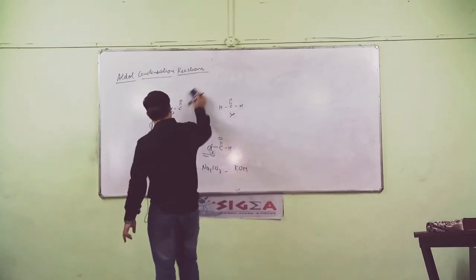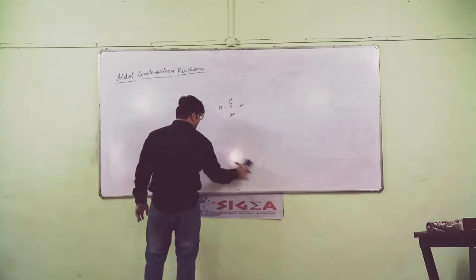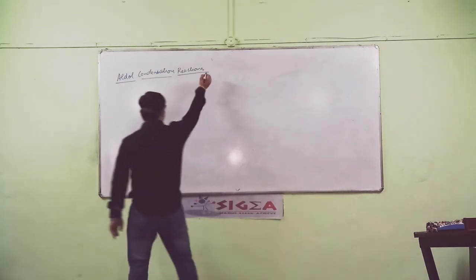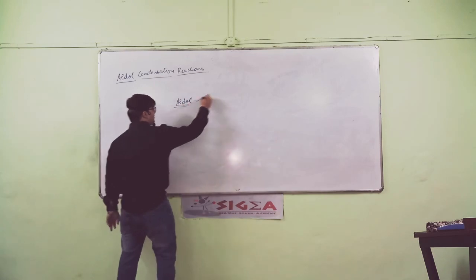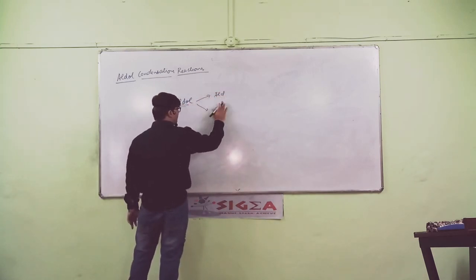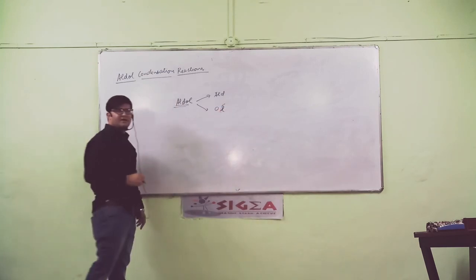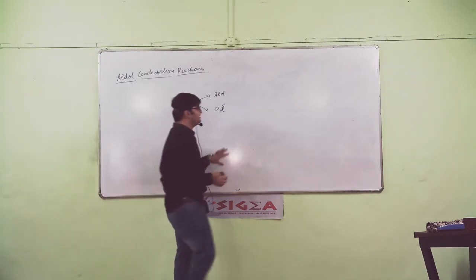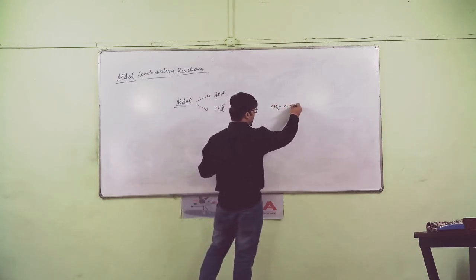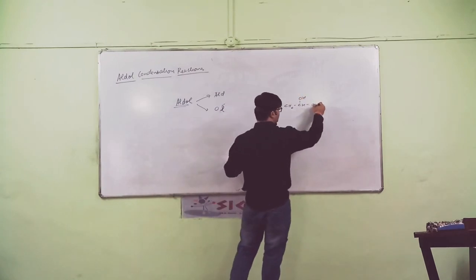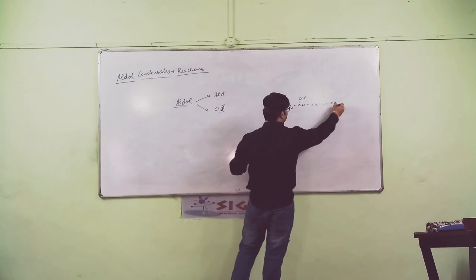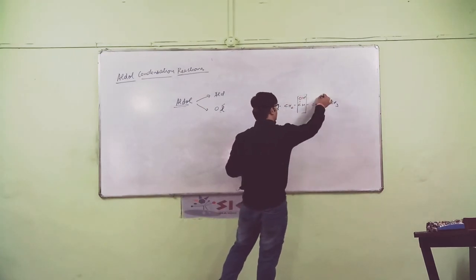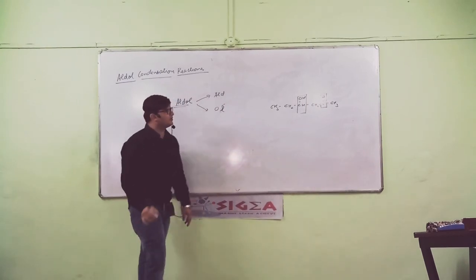What is aldol? If you consider CH2, CH2, CH, CHO. Aldol has presence of OH group as well as presence of carbonyl, keto group or aldehyde group. That's the compound of aldol.